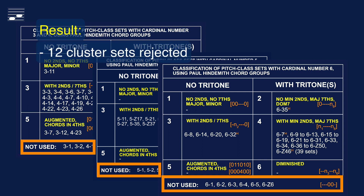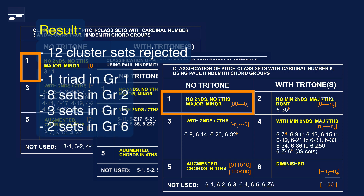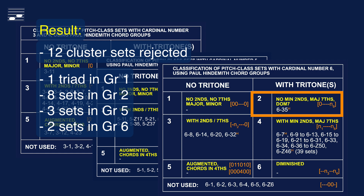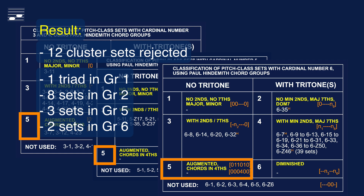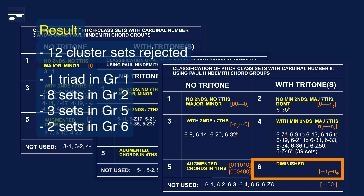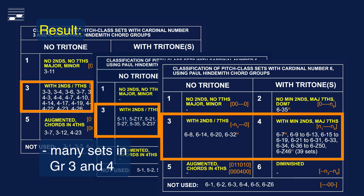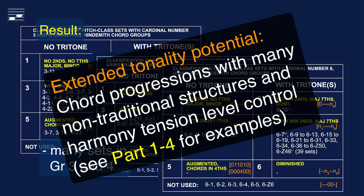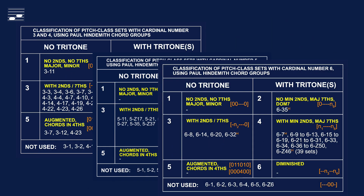I rejected 12 cluster type PC sets. In group 1 we find a single major minor triad set. There are eight dominant chord-like sets in group 2. We find three sets in group 5 with the augmented chord and the triad in fourths, and two diminished chords in group 6. The majority of sets land in the high dissonant chord groups 3 and 4. In earlier episodes I showed characteristics and voicings of some high potential sets that have a tonal equivalent chord or maximize the number of consonant thirds in the structure, achieving a large pool of modern chord structures for use in a controlled way in a diatonic symmetric harmony chord progression.